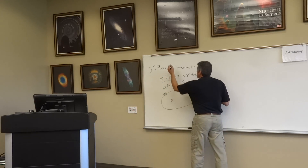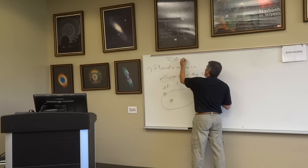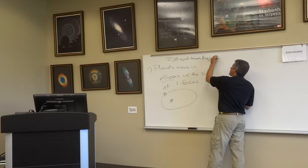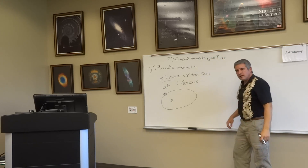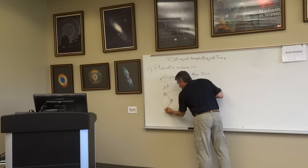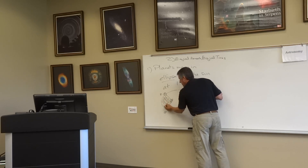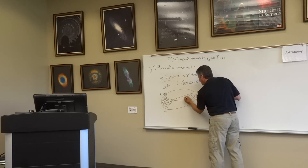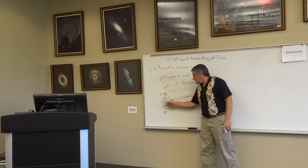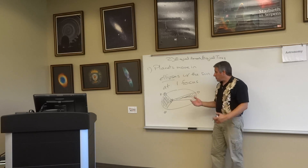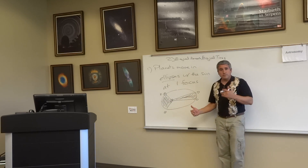Kepler's second law states: equal areas, equal times. What does he mean? If we took a planet like the Earth orbiting the sun and we carve out a certain amount of area — move the Earth from point A to point B, carving out a certain area — then move the Earth from point C to point D. If you can convince yourself that these two areas are equal, what he said is it takes the same amount of time for a planet to go from A to B as it does from C to D.